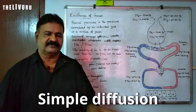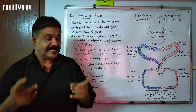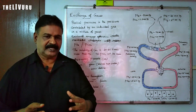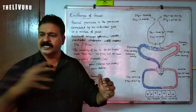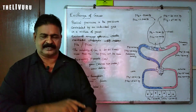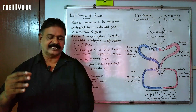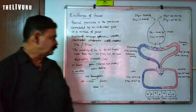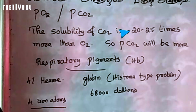This exchange occurs on the basis of diffusion. Diffusion takes place in the atmosphere and in the body. The diffusion of oxygen and carbon dioxide occurs on the basis of partial pressure gradient. Simple diffusion takes place on the basis of partial pressure gradient.